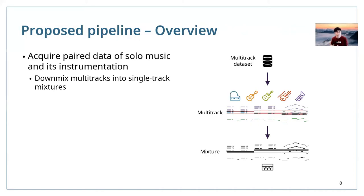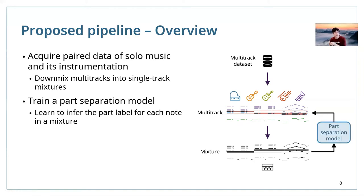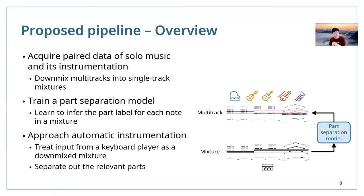Here's an overview of the whole pipeline. First, we downmix multitracks into single-track mixtures from a multitrack dataset to acquire paired data of solo music and its instrumentation. Then we train a part separation model that learns to infer the part label for each note in the mixture — from the single-track mixture to the multitrack music. We can then approach automatic instrumentation by treating input from the keyboard player as a downmix mixture and separating out the relevant parts.